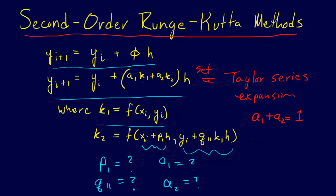Well, it turns out when we do that—and you can track this on page 729—when we do that, we get the following constraints: a1 plus a2 is equal to 1. We get this other constraint: a2 times p1 is equal to 1/2. And a2 times q11 is equal to 1/2. So we get these three constraints, and so we have three equations, but we have four unknowns, right? a1, a2, p1, and q11.